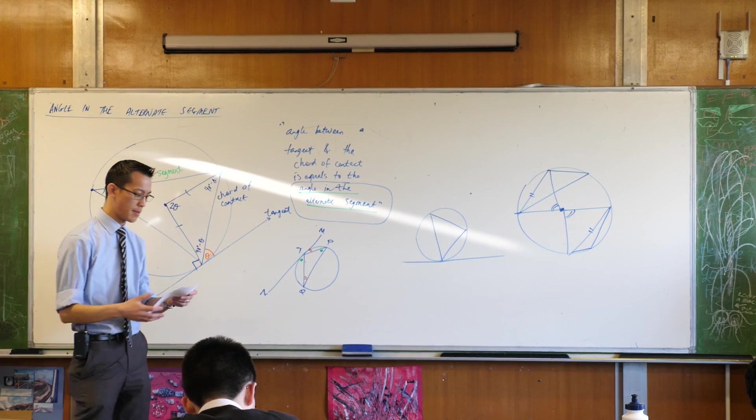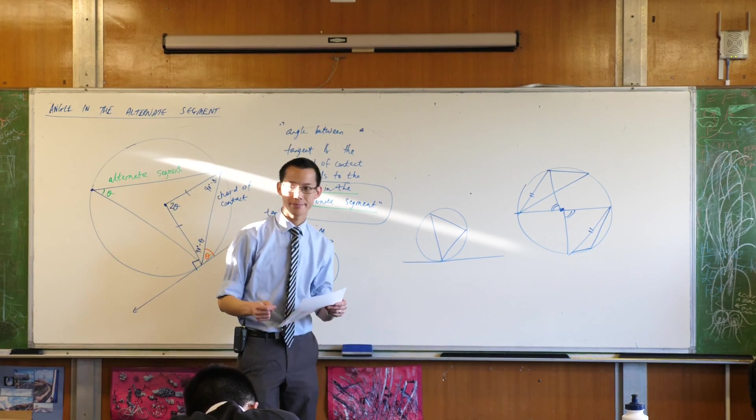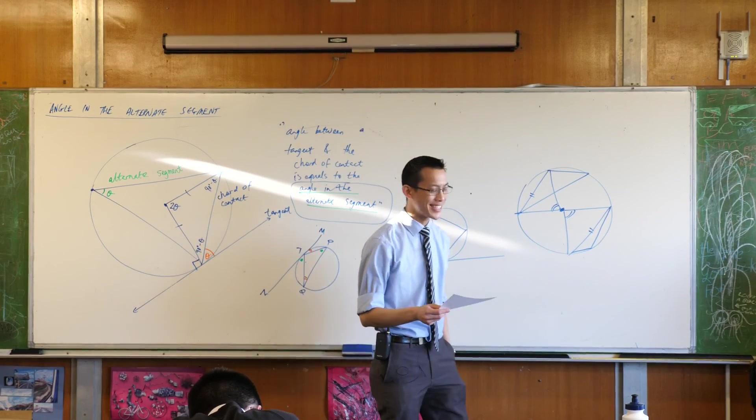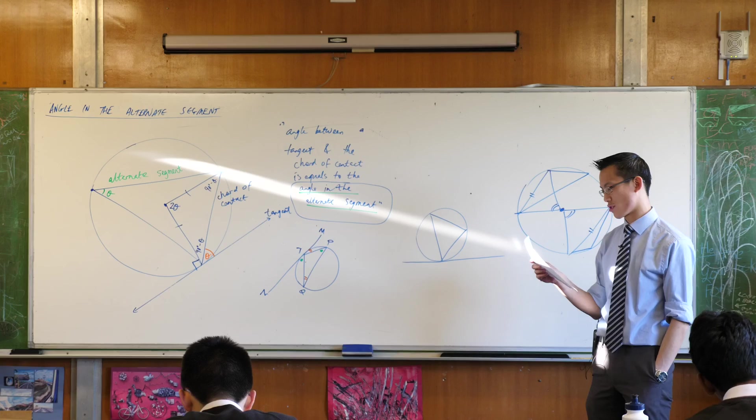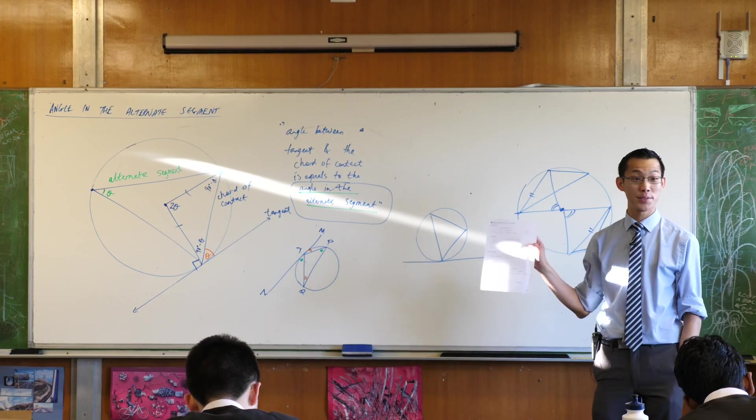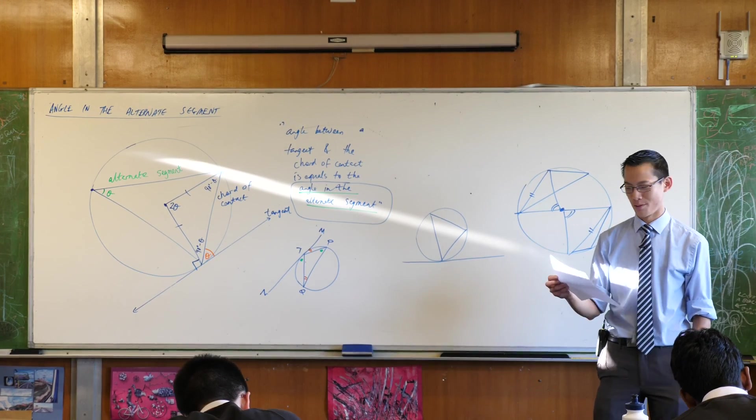We're going to keep on talking about equal chords. So, number two, equal chords are equidistant from the center. Sorry that the lines are a little bit too small to fit. I was trying to cram it all in one page, which I successfully did. But then you have to write really small. Sorry about that.